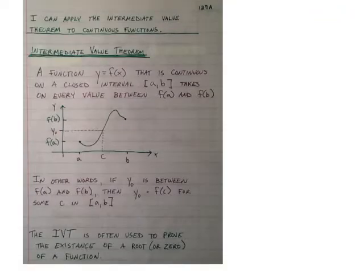We'll start our notes on page 127A, and we're going to learn about the Intermediate Value Theorem. The Intermediate Value Theorem applies to continuous functions. If we have a continuous function y equals f of x, on the closed interval from a to b, it takes on every value between f of a and f of b.